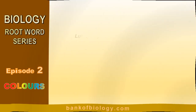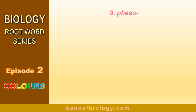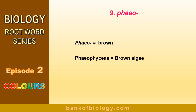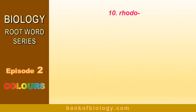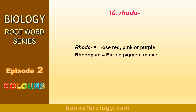Number 9: pheo. Pheo means brown. Phaeophyceae is a group of algae — its color is brown algae. Number 10: rhodo. Its meaning is rose, red, pink, or purple. For example, rhodopsin is a pigment in the eye, and it is purple in color.